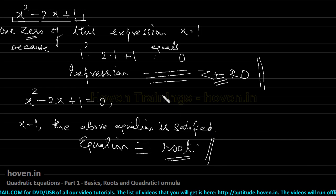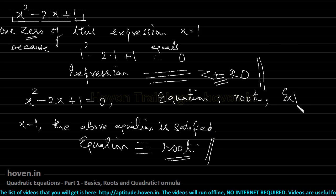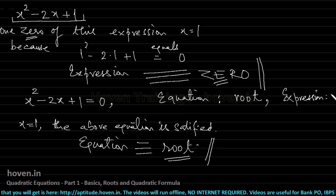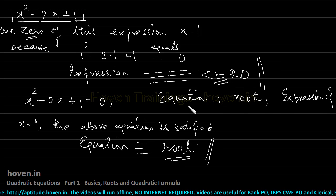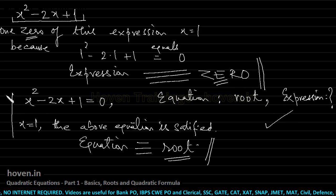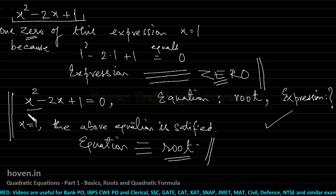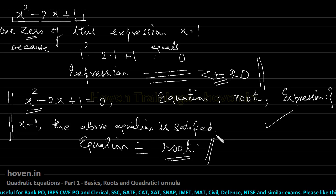A root of a quadratic equation is the value of x at which the equation is satisfied. The zero of an expression is the value of x at which the expression equals 0. So: equation is analogous to root, and expression is analogous to zero. If somebody asks: 'equation is to root, then expression is to ___?', the answer is zero.